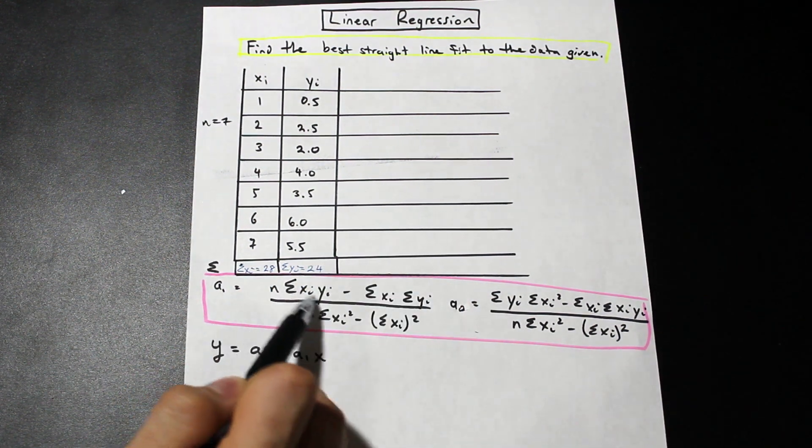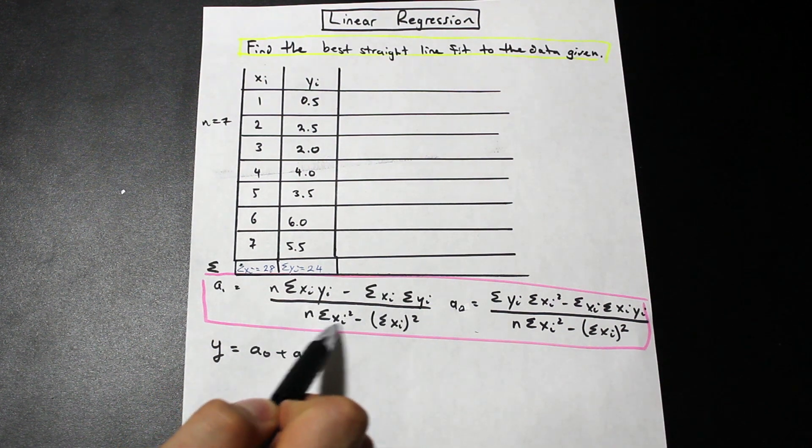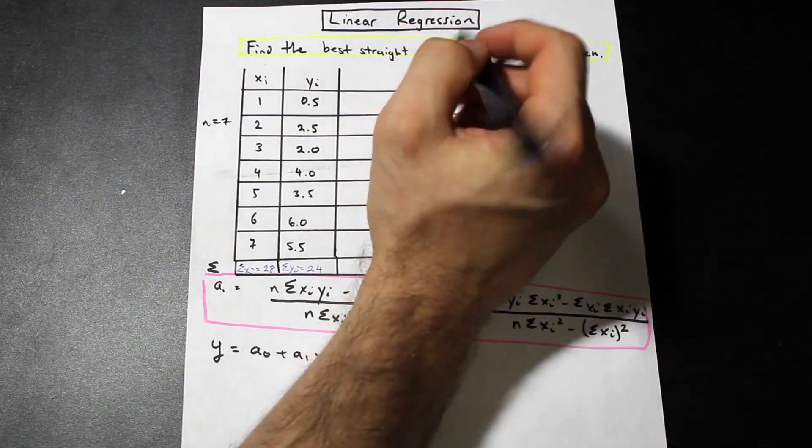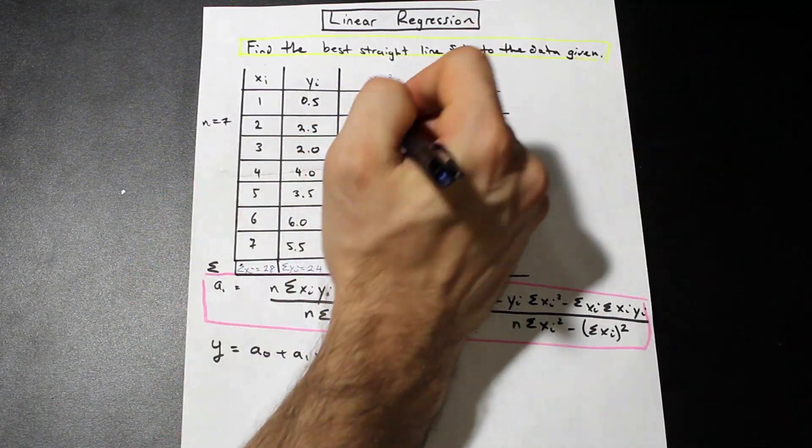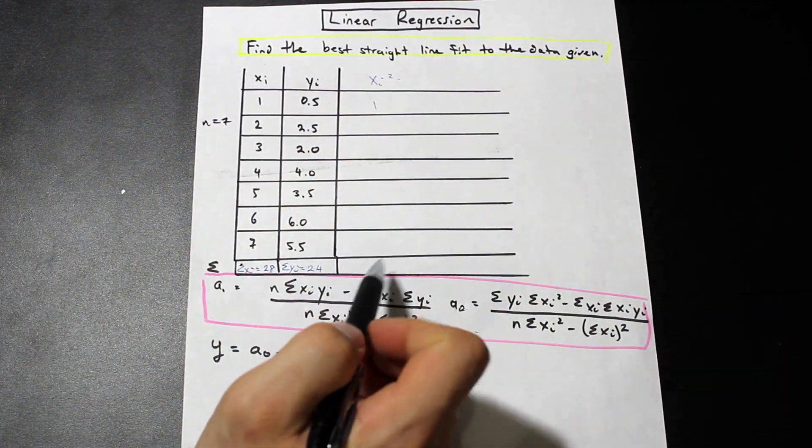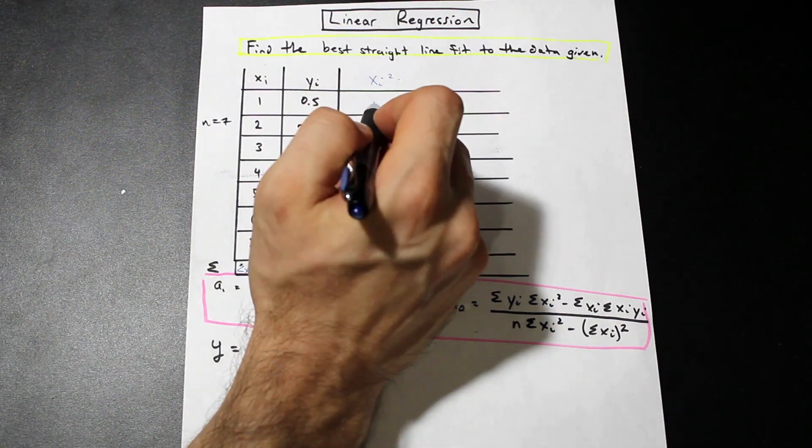What else do we need? We're going to need the summation of yi squared, xi squared. So let's square all the xi's, and then we can just summate them at the bottom. Let's go ahead and start that.